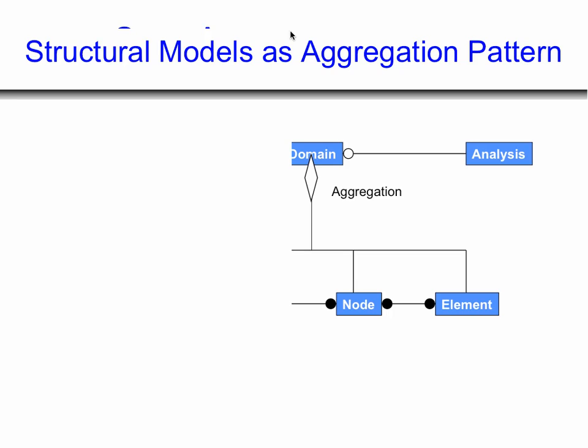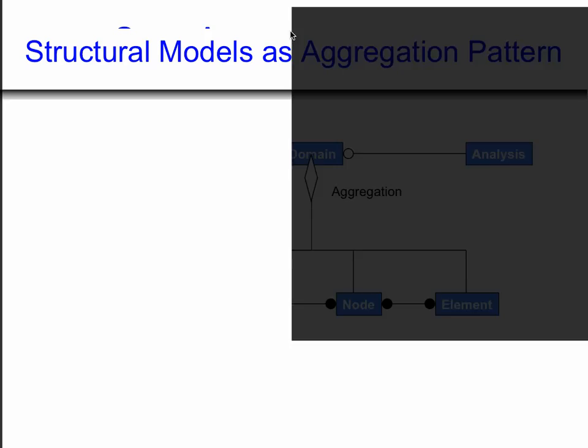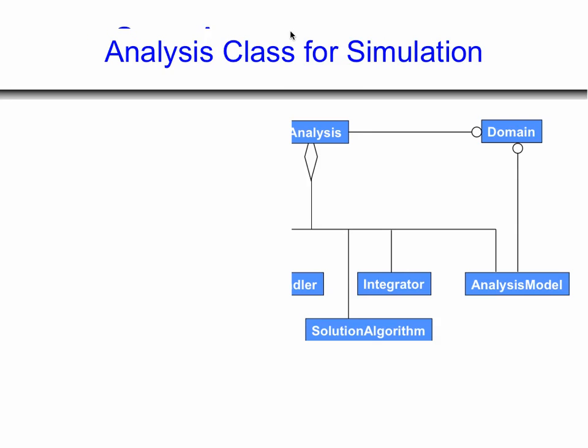We follow the notion of what are called design patterns — a widely used concept in computer science where you recognize what different objects there are and what patterns exist between them. Design patterns show you what the interface should be to the different classes. So OpenSees doesn't have a static analysis or a transient analysis as such — our analysis objects are compositions or aggregations of a whole bunch of different objects.